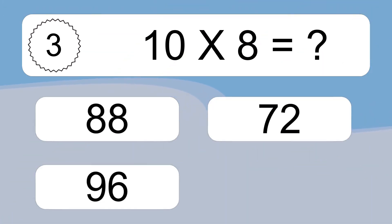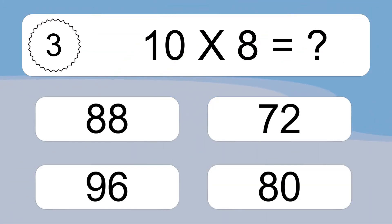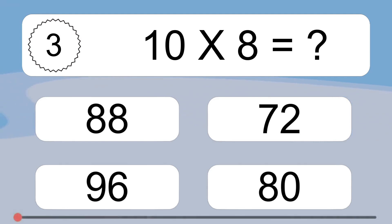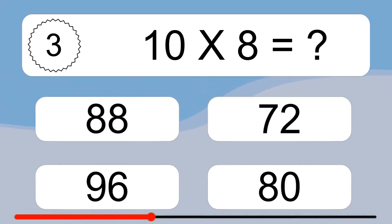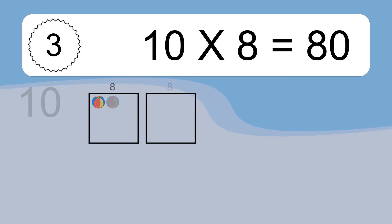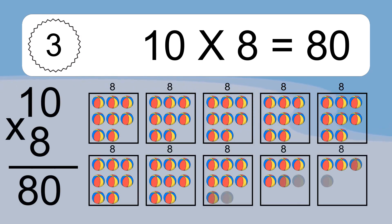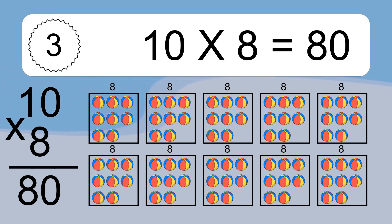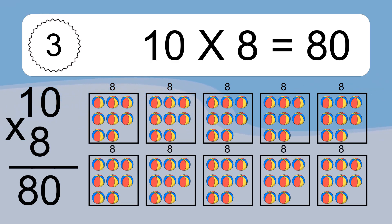Ten times eight equals what? Ten times eight equals 80. We have ten boxes, and each box has eight colorful balls inside. If you count all the balls in all the boxes together, you will have ten times eight balls. This equals 80 balls.